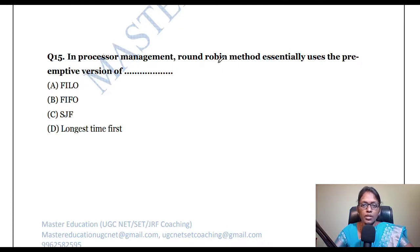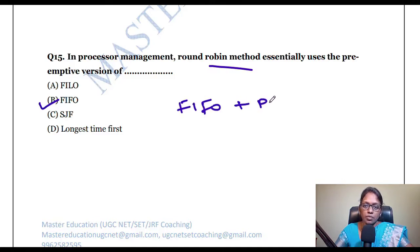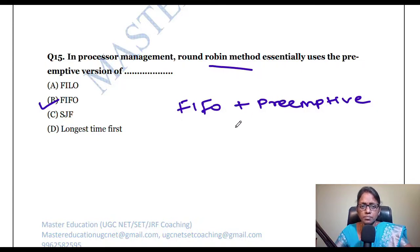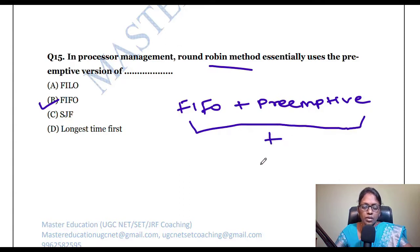Next question: in processor management, the round robin method essentially uses the preemptive version of FIFO. Preemptive means the process can be released before completion — for a quantum of time it executes, then gives the processor to another process. FIFO plus preemptive together is called round robin scheduling.